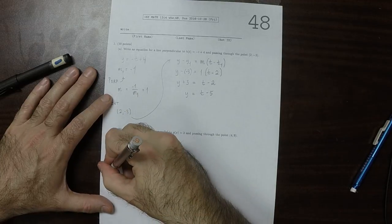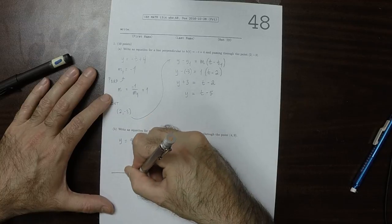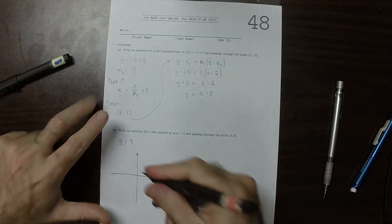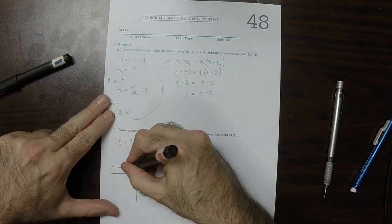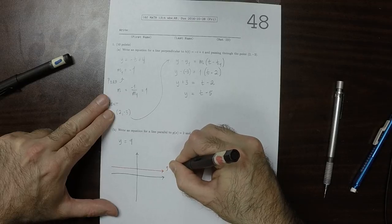So to see why that's the case, g of x equal to 3, its plot looks like this.